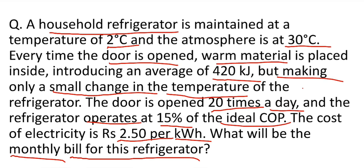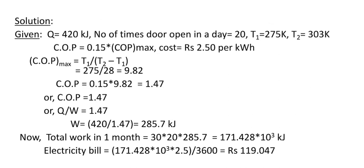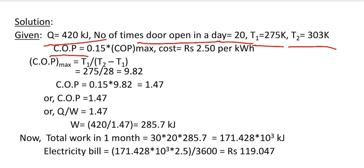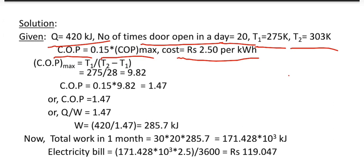So let's go for the solution. Heat input of 420 kJ is given. Number of times the door is open in a day is 20. Inside temperature and ambient temperature are given. The operating COP is 15% of maximum COP or ideal COP. Cost of electricity is 2.50 per kWh.